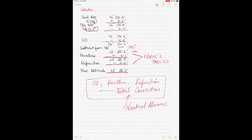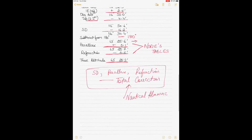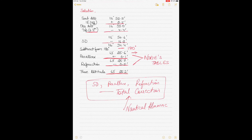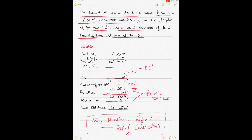Previously, individual corrections were applied and that is why I showed that method. The modern way is to apply the index error and dip corrections, subtract from 180 degrees, and then apply the total correction to get the true altitude. Both ways are correct. To apply the total correction you need to know the month the sight was taken. If the month is given, use the total correction; if not, apply individual corrections from the Norris tables.